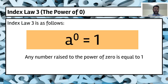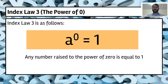This is the law: any number raised to the power of zero equals one. On the next slide I'm going to show you some proofs. We're going to go through three different examples on how to prove that.